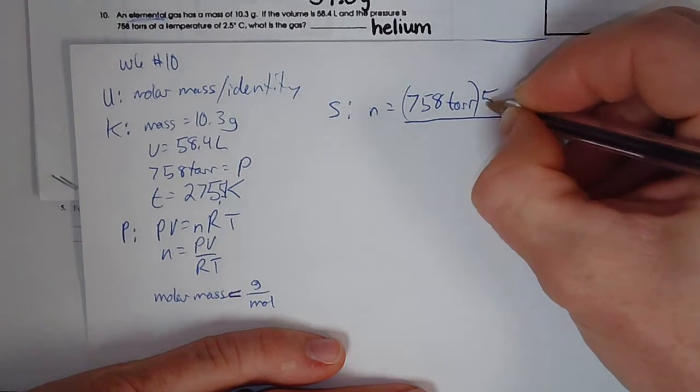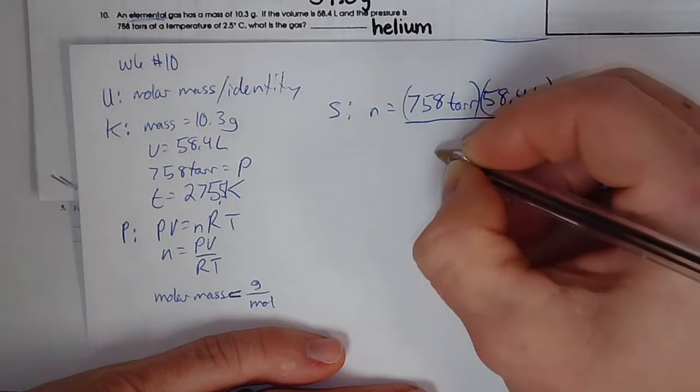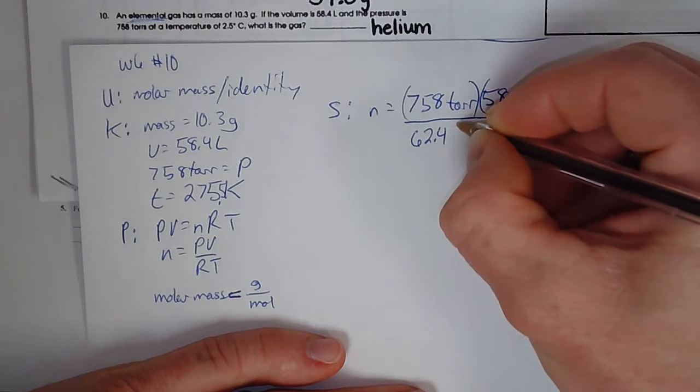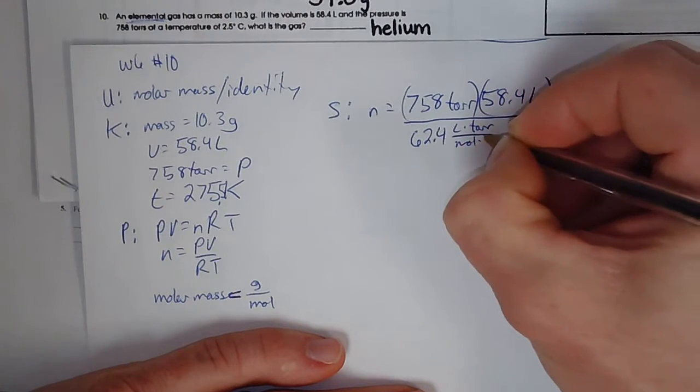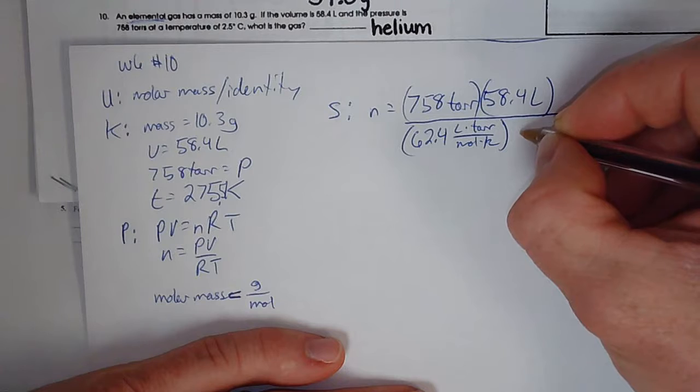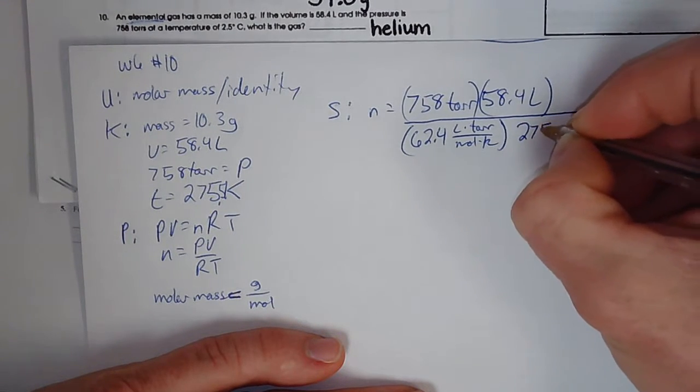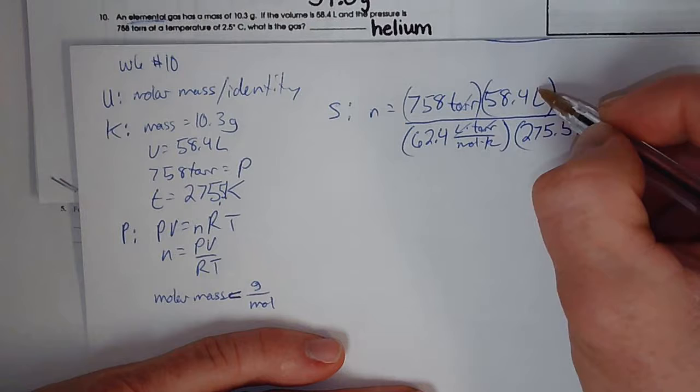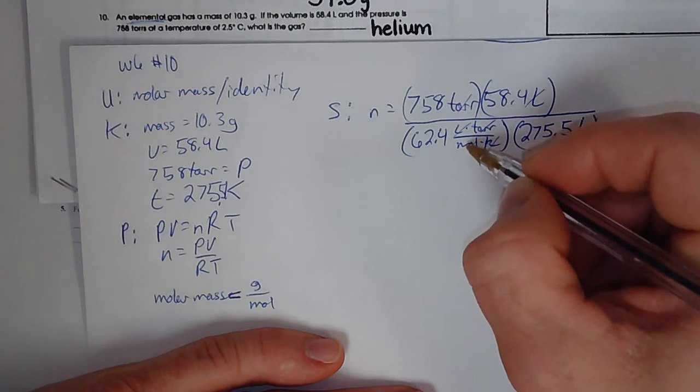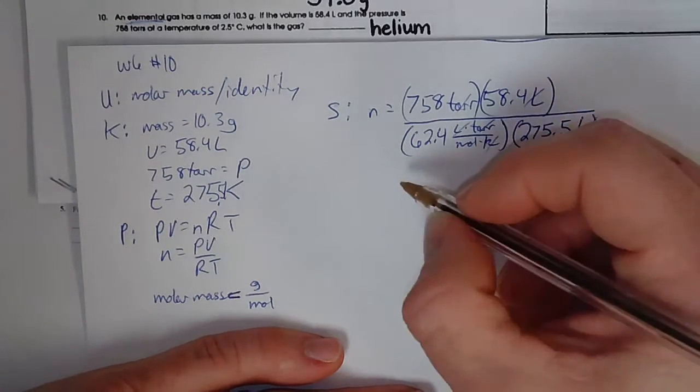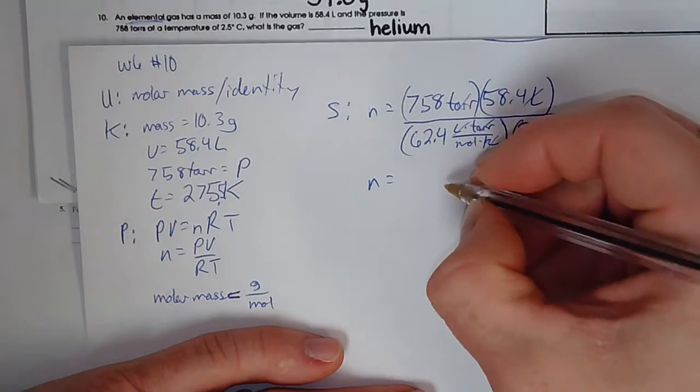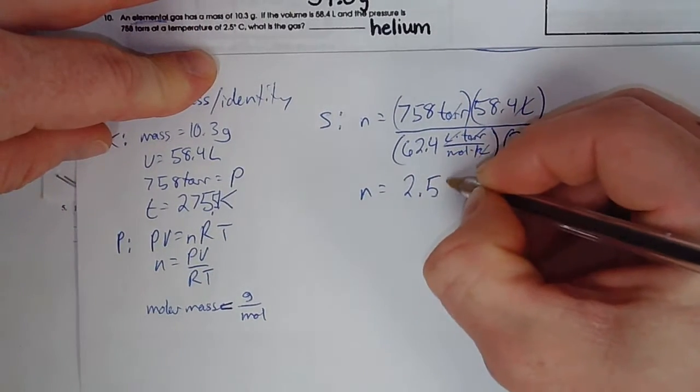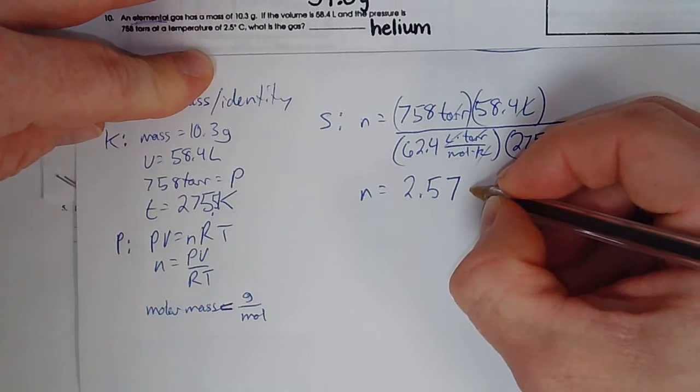Volume is 58.4 and the gas constant is 62.4. And the temperature is 275.5 Kelvin. Okay. Torrs cancel, liters cancel, kelvins cancel. And then moles in the denominator of the denominator will give me moles in the numerator in the answer. So let's do that, apply that to my calculator. All right, I got a 2.57 for the number of moles.